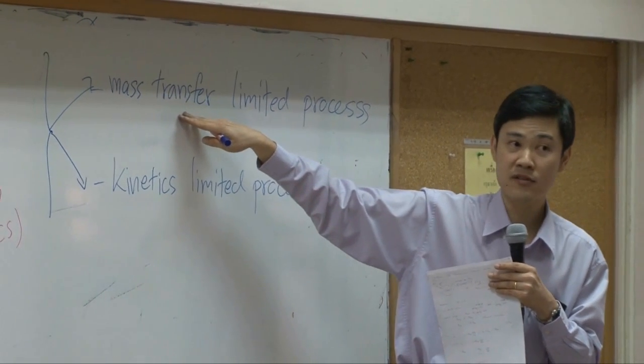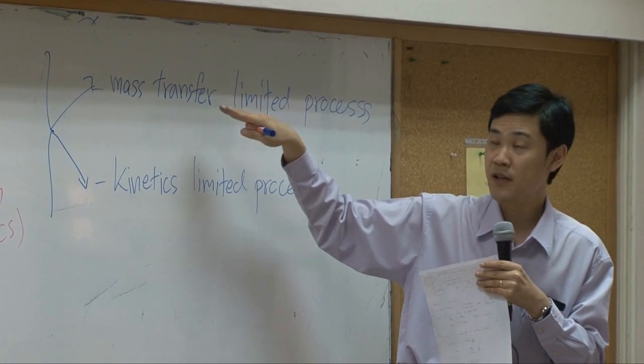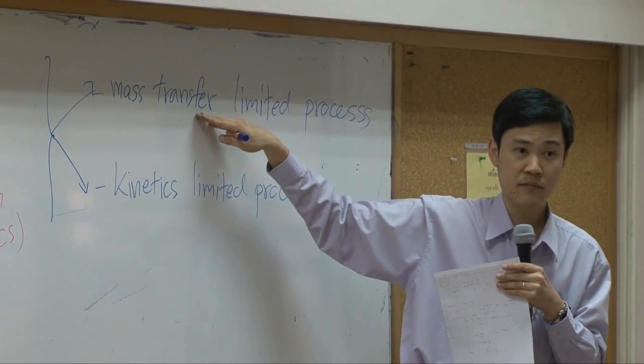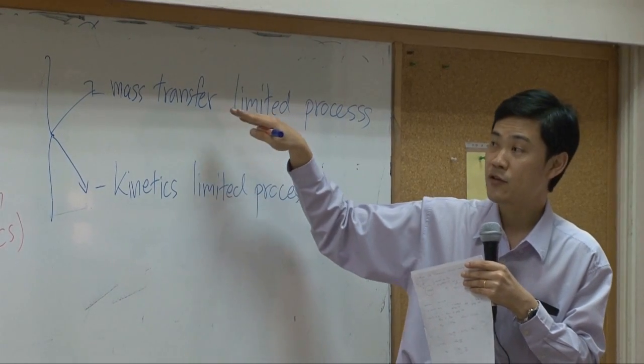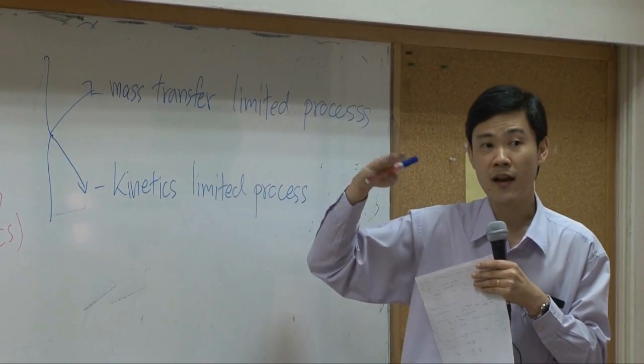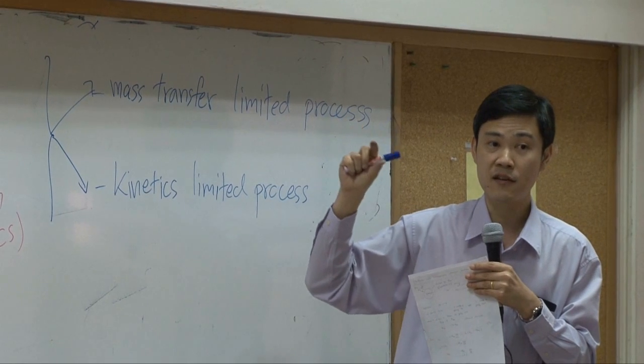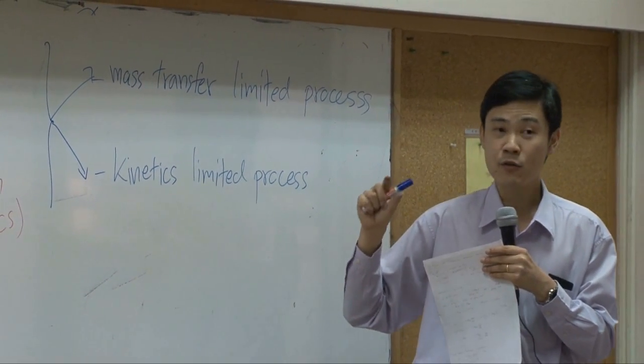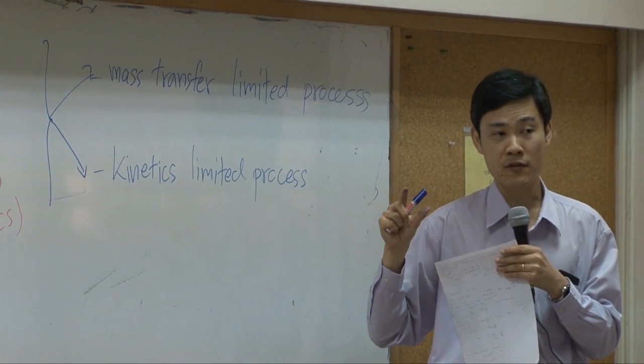If you want the process to be faster, you need to supply mass to the catalyst faster. The way to do it is to increase the velocity so that the thickness of the film resistance becomes smaller. Or increase the driving force for mass transfer.